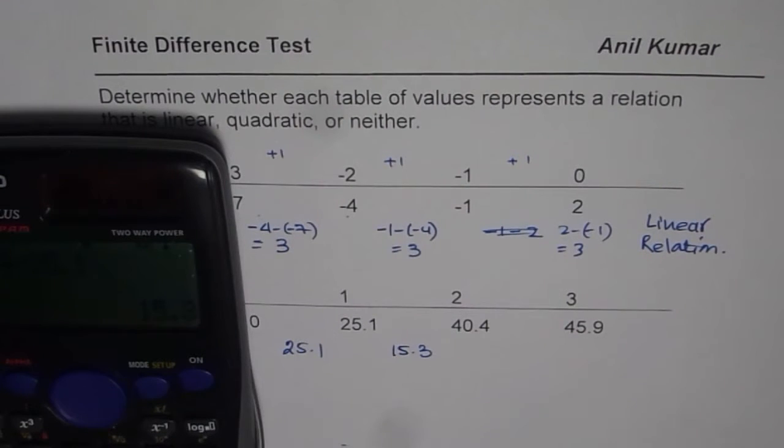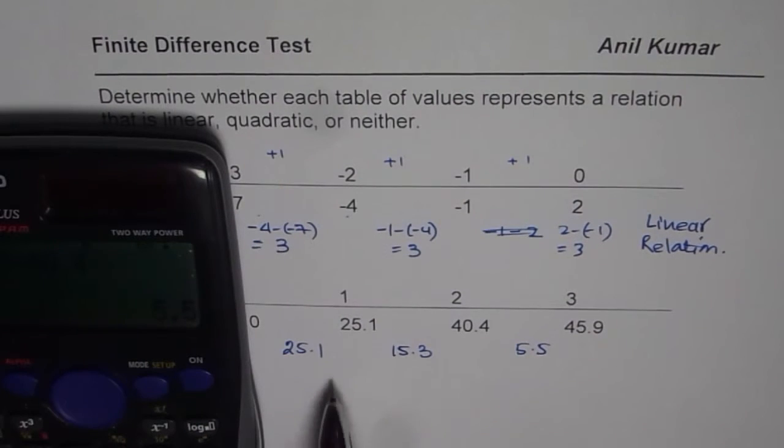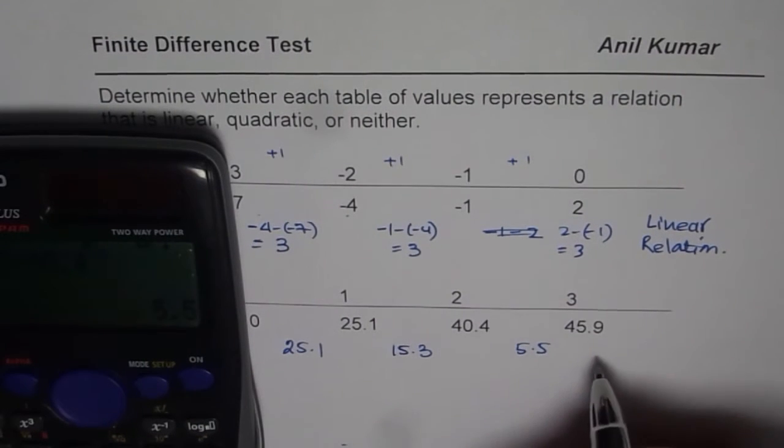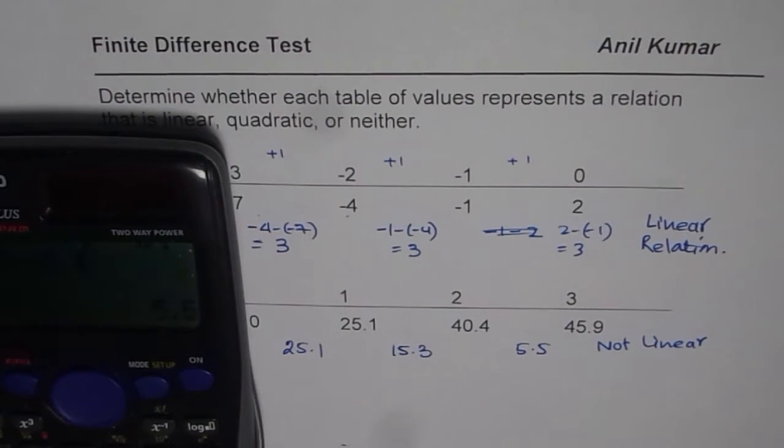Now, let us do 45.9, take away 40.4. That is 5.5. So, first difference is not constant. This is not linear. Now, let us check if it is quadratic.